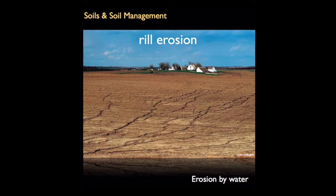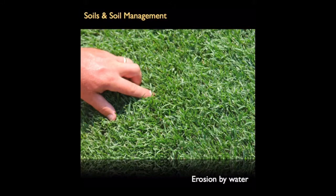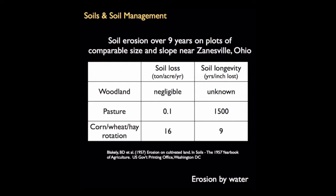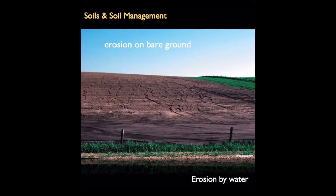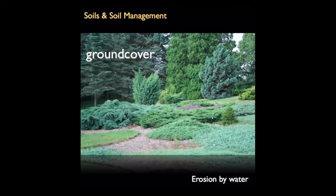Rills continue to widen as soil particles are carried away by running water. Cultivation can temporarily remove rills, but they tend to reform with subsequent rains or irrigation. Severe soil erosion by water results in the formation of gullies. Plant cover tends to slow the rate of flow of water across the soil surface and reduces the rate of erosion. The data shown here demonstrates how the regular cultivation and management of fields for annual crop production causes much higher rates of soil loss and its consequent reduction in longevity. Erosion is most serious on bare ground and is minimal with thick sod, ground cover, or surface litter or mulch.